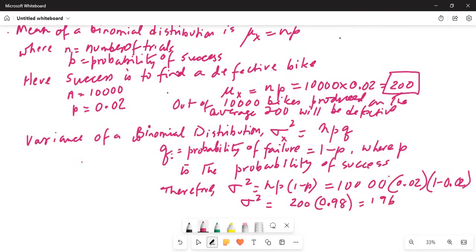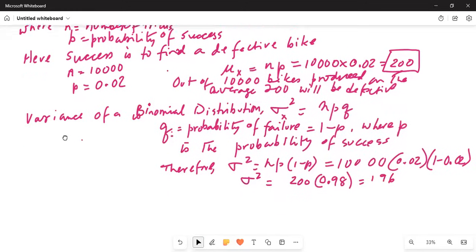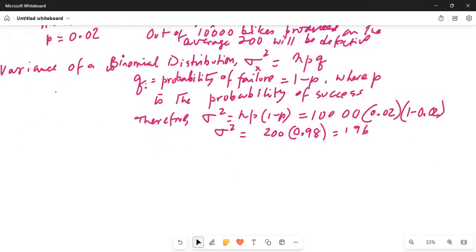Now, that is the variance. To find the standard deviation, we have to take the square root of the variance.